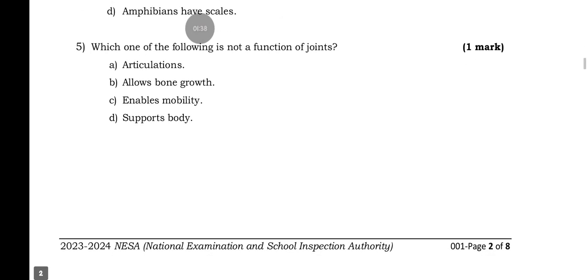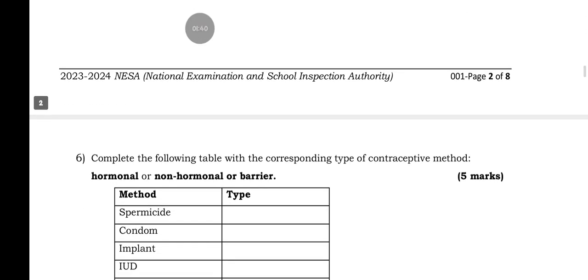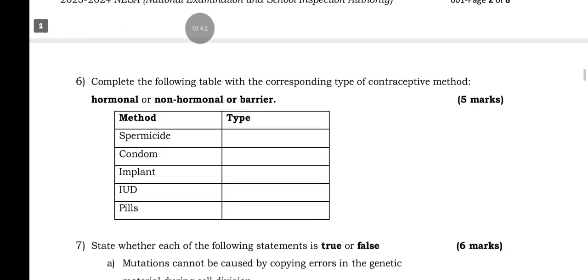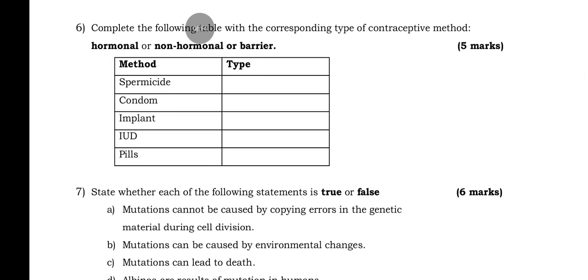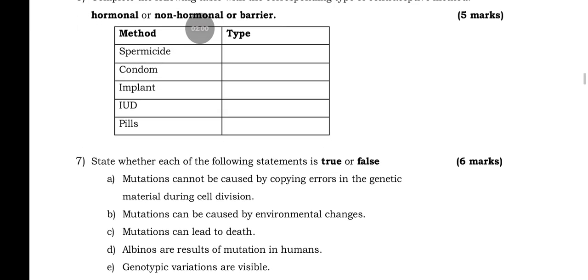Number six is all about completing a table with the corresponding types of contraceptive methods — it's about human reproduction. You have hormonal and non-hormonal or barrier methods: we have spermicides, condoms, implants, IUD, and peers. The answers are all provided in my answer sheets below.